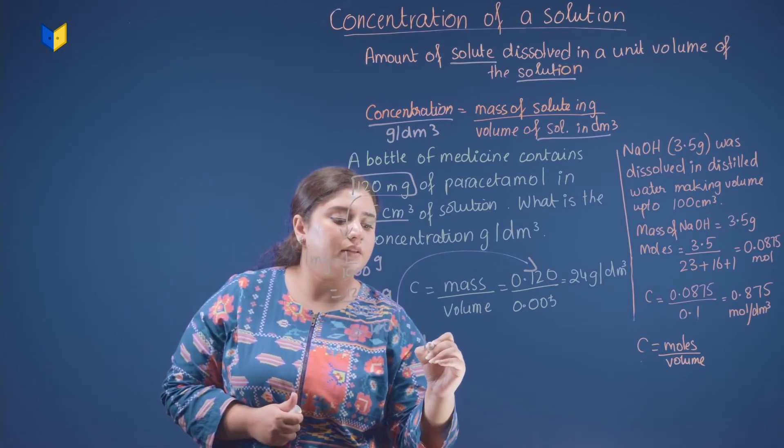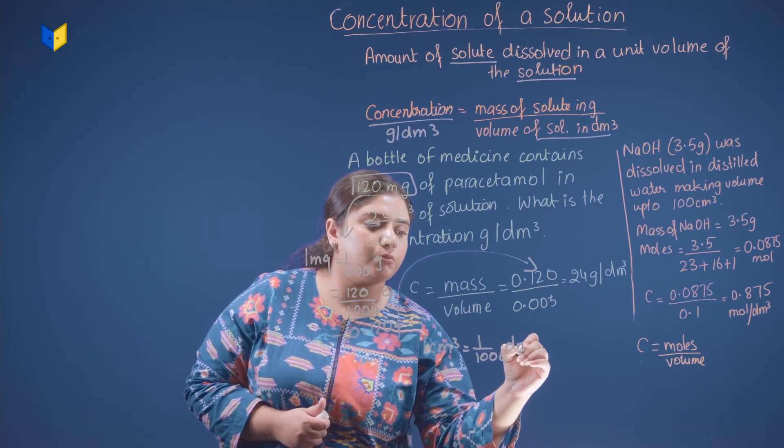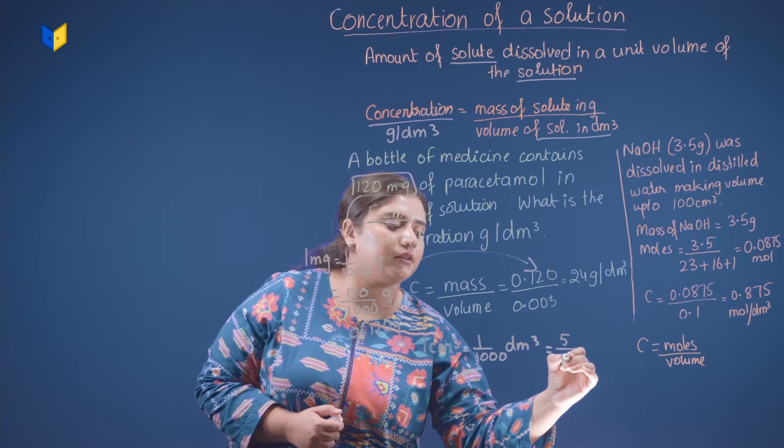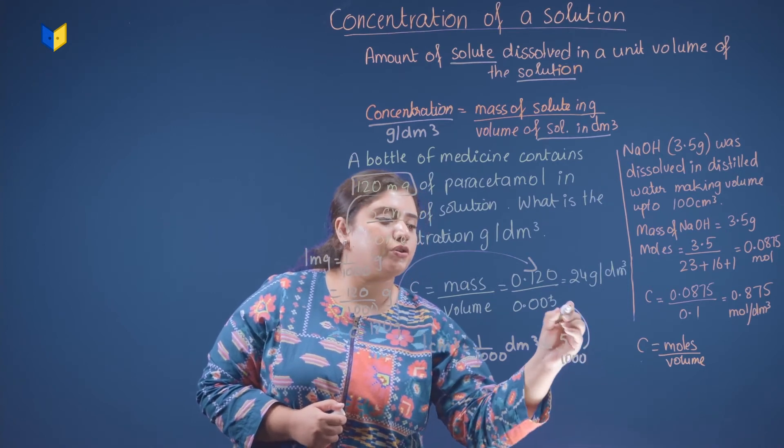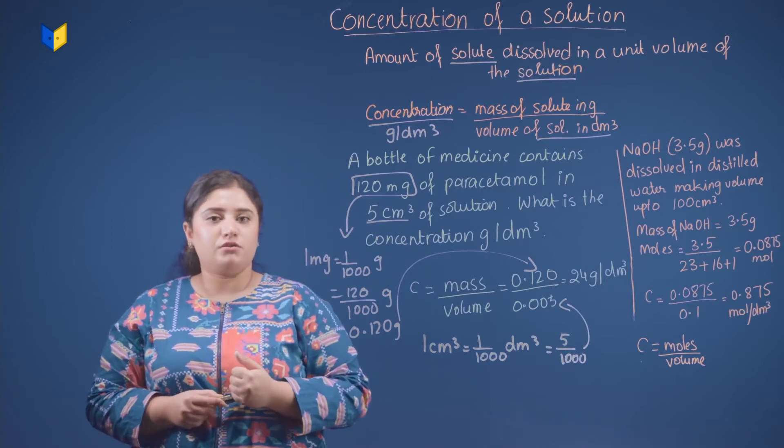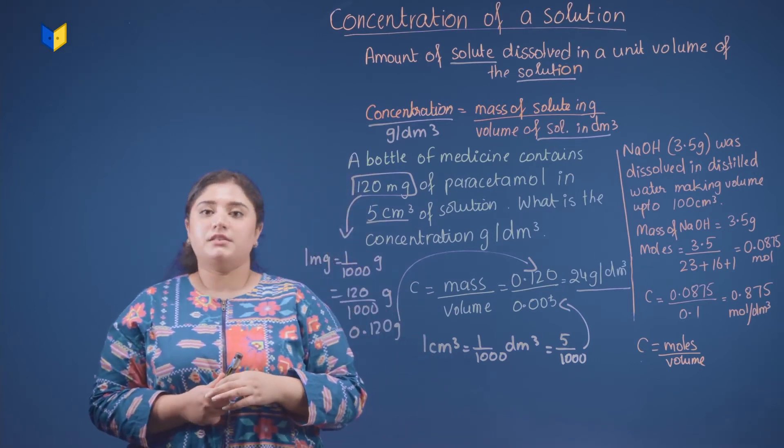Same is the case with 5 cm cube. One cm cube equals one over thousand dm cube. So you are going to divide 5 by 1000 and you are going to get 0.005. When you divide both these quantities, you are going to get 24 gram per dm cube. This is your concentration.